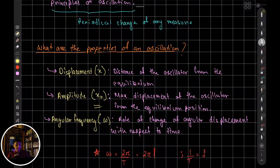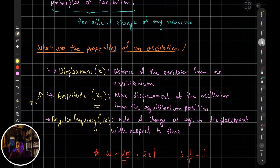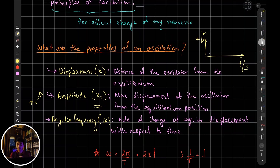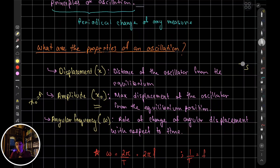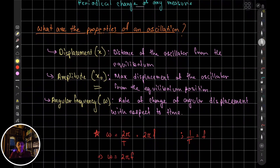So x-naught equals amplitude, defined as the maximum displacement of the oscillator from the equilibrium position. On a displacement-time graph, with x on the vertical axis and time in seconds on the horizontal axis, you can find the amplitude by reading the maximum displacement from equilibrium directly from the curve.